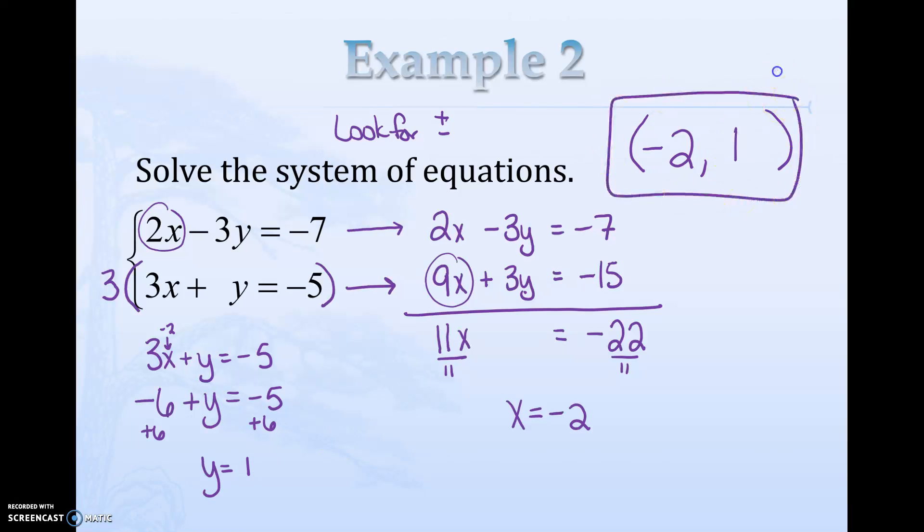Add 6 to both sides and we get y equals 1. So our solution is negative 2, 1. If we were to rearrange both of these equations to make them both look like y equals mx plus b and not make any mistakes, and graph them both without making any mistakes, they would cross at negative 2, 1.